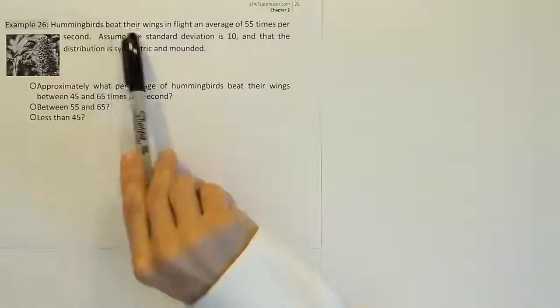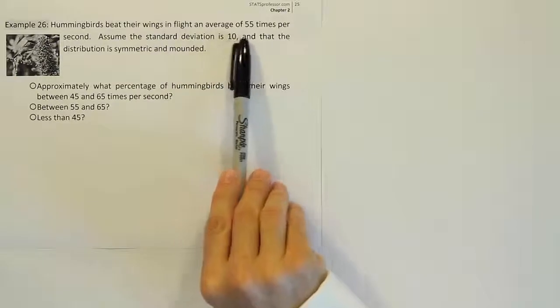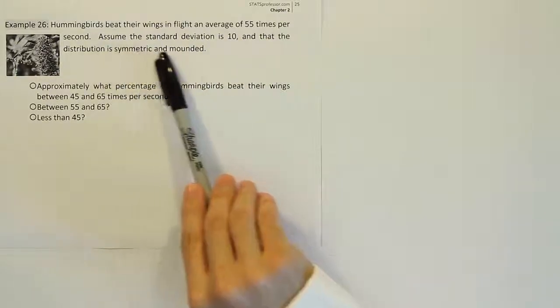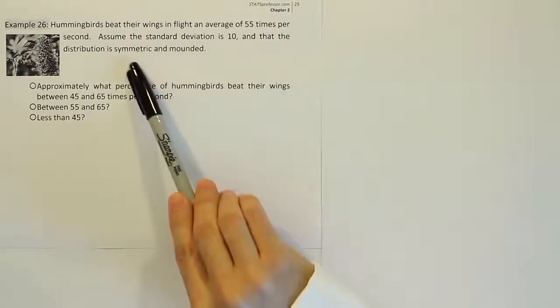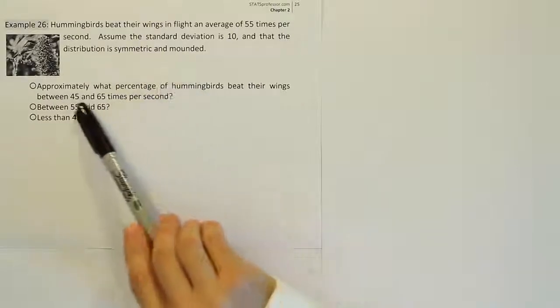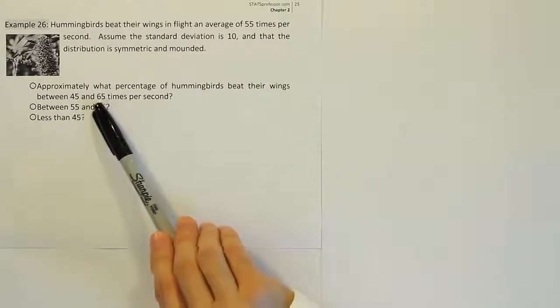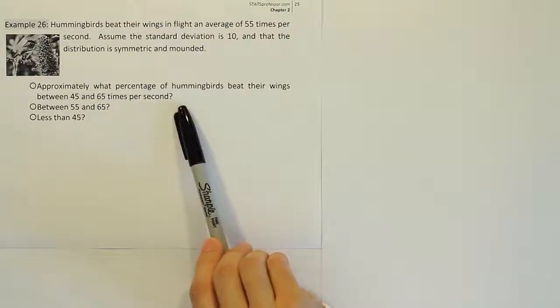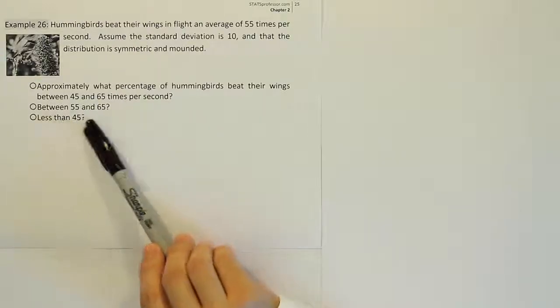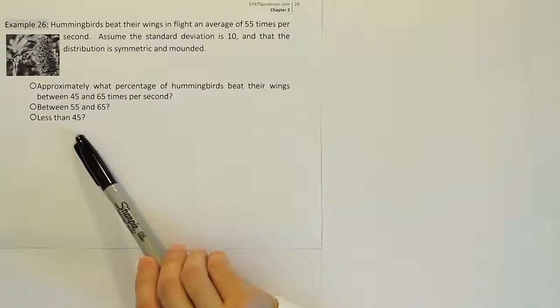Example 26. Hummingbirds beat their wings in flight an average of 55 times per second. Assume the standard deviation is 10 and that the distribution is symmetric and mounded. Approximately what percentage of hummingbirds beat their wings between 45 and 65 times per second? Between 55 and 65? And less than 45?